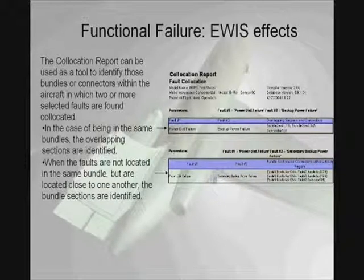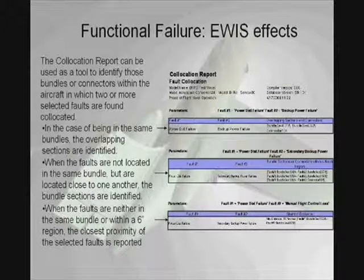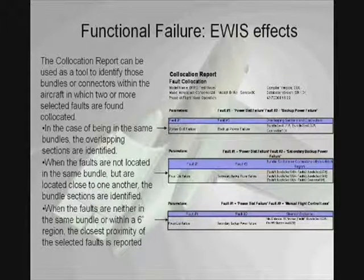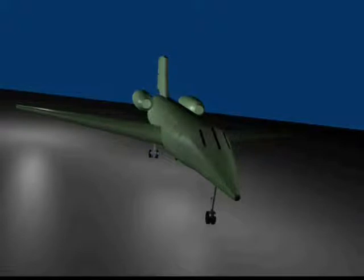Lastly, if the two faults are nowhere near each other, the minimum distance between these two faults is reported. In this case, fault one and fault two are found no closer than 16 inches. In this example, we see the co-location analysis abilities of the eWistrat.